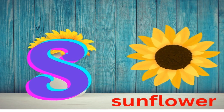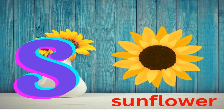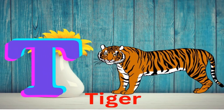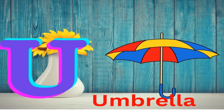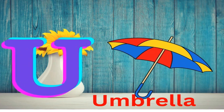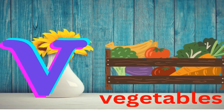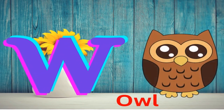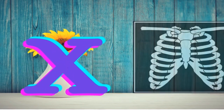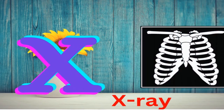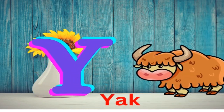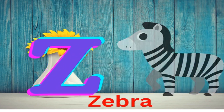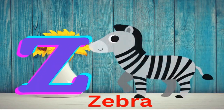S for sunflower. T for tiger. U for umbrella. V for vegetable. W for owl. X for x-ray. Y for young. Z for zebra.